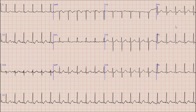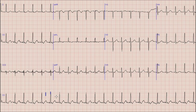Starting with the discussion: one prominent thing you can note on this ECG is the presence of tachycardia. The heart rate is around 140 to 150 beats per minute, so this means that this is a tachycardia.